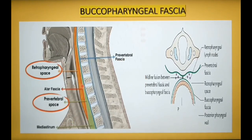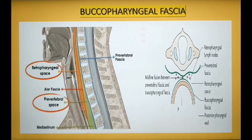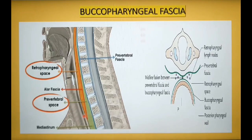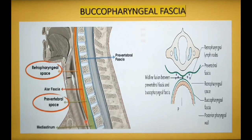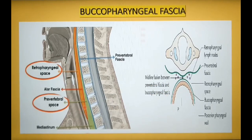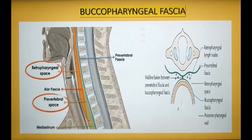There is one point where the alar fascia fuses with the retropharyngeal space — at this point both fascias meet and the retropharyngeal space ends. The prevertebral fascia communicates with the buccopharyngeal fascia at a midline fusion point at a variable level between the 6th cervical vertebra (C6) and the 4th thoracic vertebra (T4).